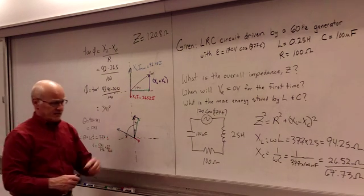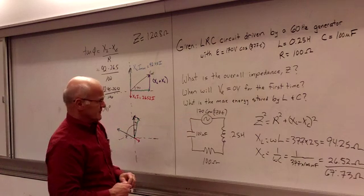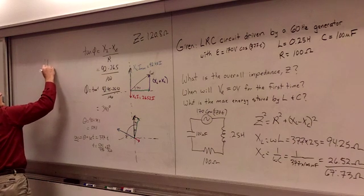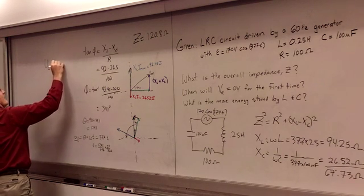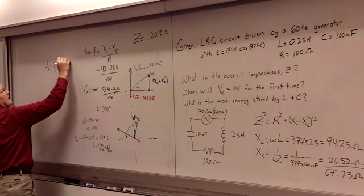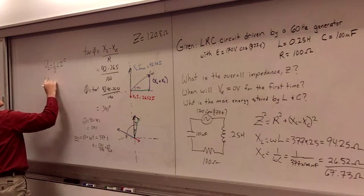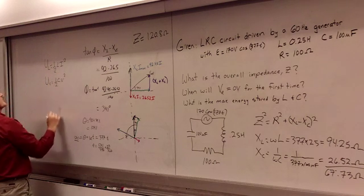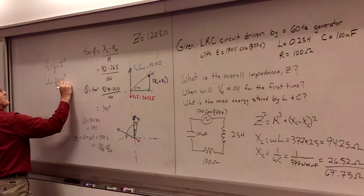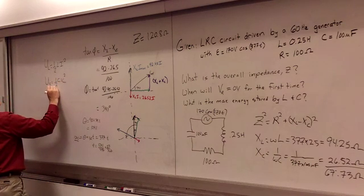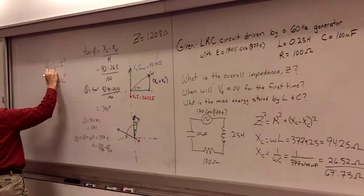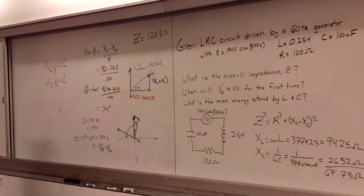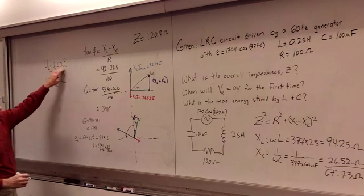And then we can ask what is the energy that's going to be stored by the inductor and the capacitor. So if we look at our equations for energy per an inductor, UL, it's going to be equal to one-half Li squared. And the energy stored by a capacitor is one-half Cv squared. The maximum value would be whenever we have maximum voltage and maximum current.